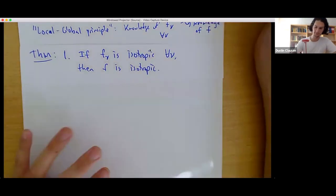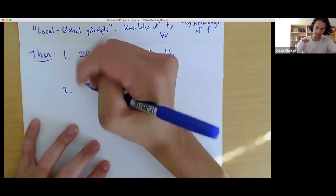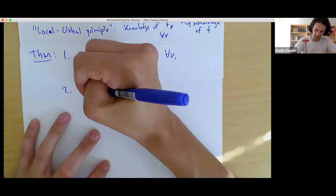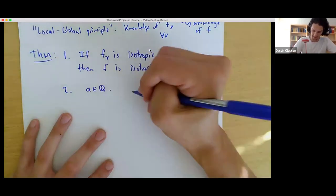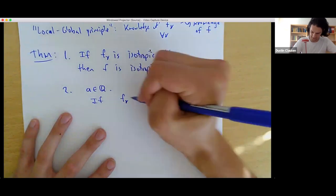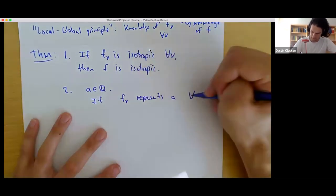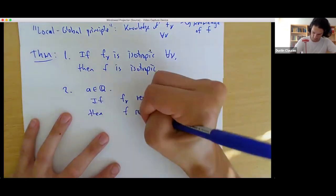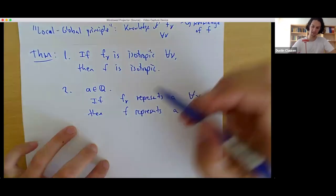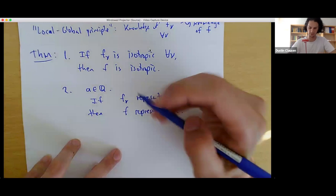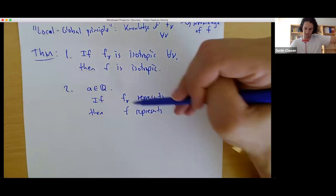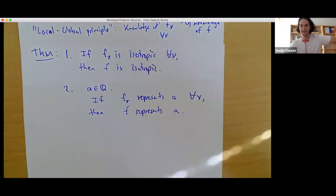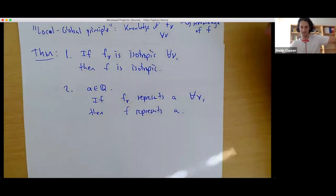The second part is: now instead of just having my quadratic form F, I'll also take a rational number A in Q. And I'll say, if F_V represents A for all V, then F represents A. So that means if you can solve the equation F_V of your variables equals A, where the variables lie in Q_V for all V, then you can solve it in Q as well. So it's the same kind of thing, except instead of asking where F is equal to zero, you ask when F is equal to some A.